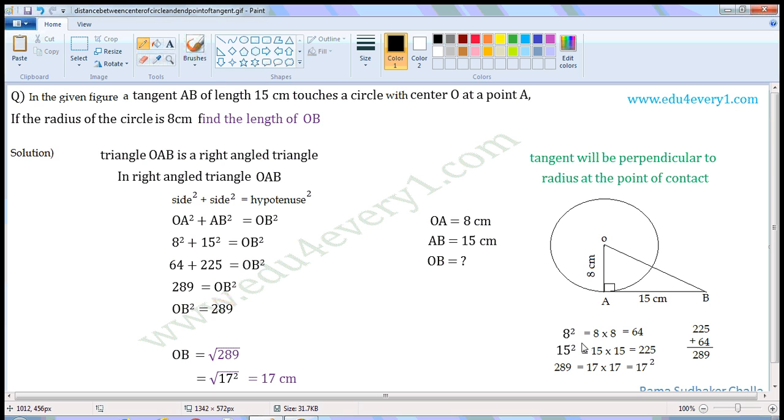8 squared means 8 × 8, which is 64. 15 squared means 15 × 15, which is 225. So we can write this as 64 + 225 = OB².